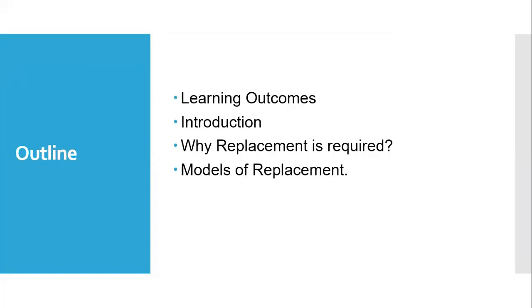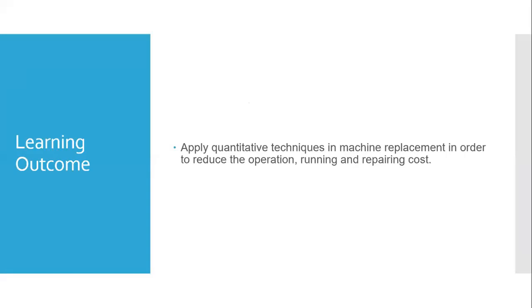Today you will be learning: first, the outcome; then the introduction; then why replacement is required; and the different models of replacement. The outcome of this entire chapter is that you will be able to apply this technique to replace man, machine, and equipment in order to reduce operation cost, running cost, and repairing cost. You will be able to apply this concept in industries, in your own household — like replacing your bike, mobile phone, car, or any gadgets.